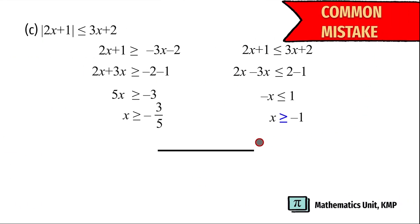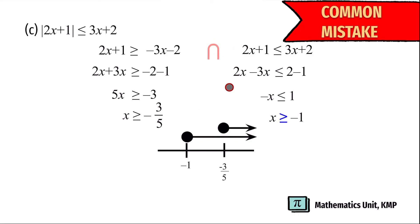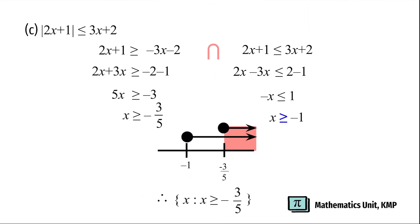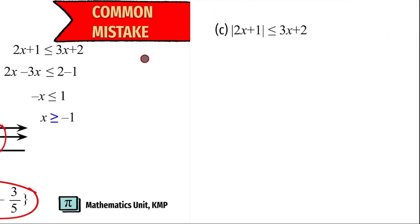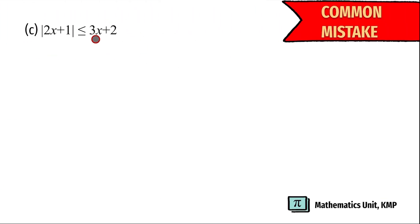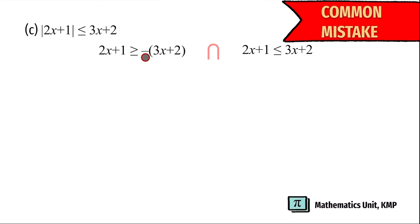This is a common mistake that tends to happen. For the number line of x greater than negative 3 over 5 and x greater than or equal to negative 1, you might think the intersection is always in the middle — that would be wrong. Remember that intersection is where the two lines overlap, and that is the correct answer. Another common mistake for this kind of question: when the right-hand side has more than one term, you must multiply all those terms by the negative, so the sign should be negative.